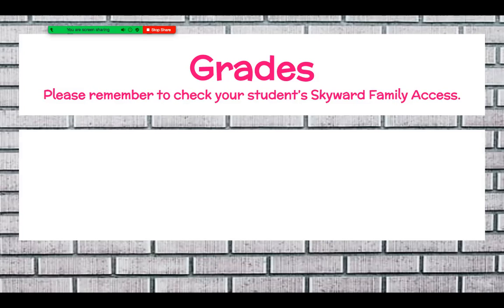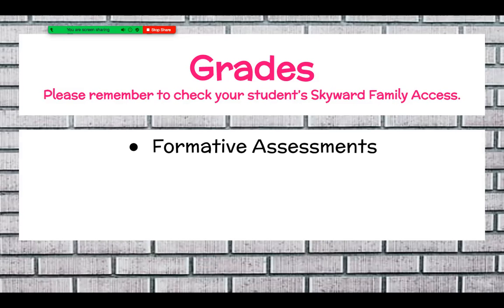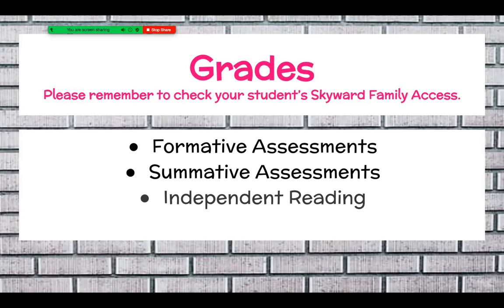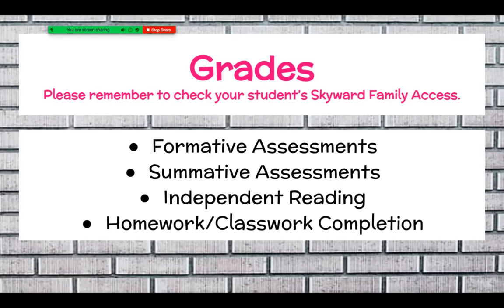One of the unique things about starting junior high is that students and you will now have access to a program called Skyward, which is an online grade book system. You are able to check Skyward at any time to see if they're missing any assignments or just as a general check of their progress. Grades in our class will be based on formative assessments, summative assessments, independent reading, and their homework or classwork completion.